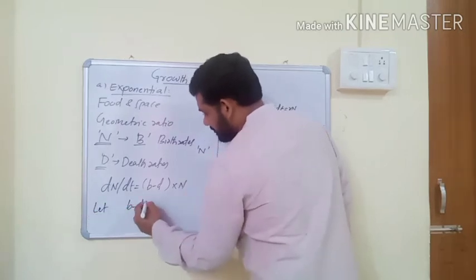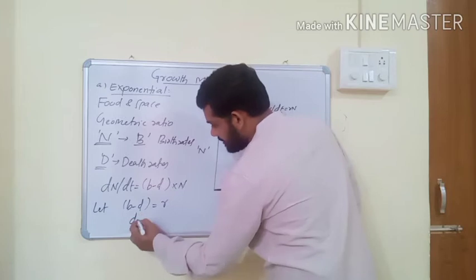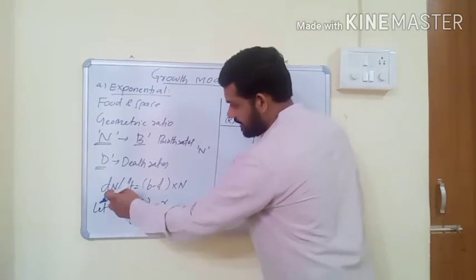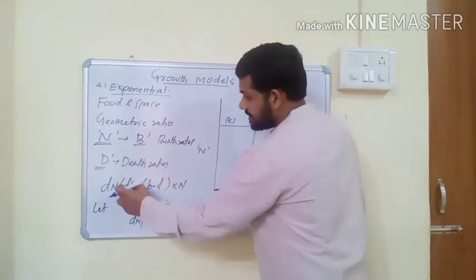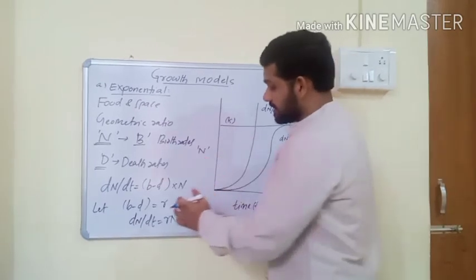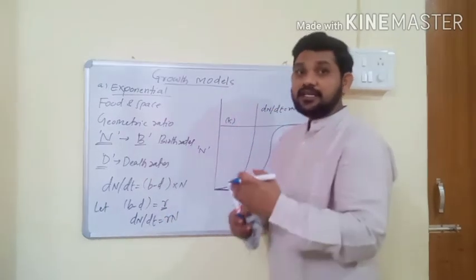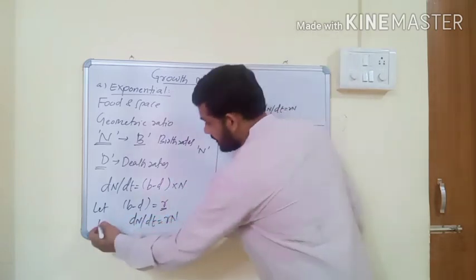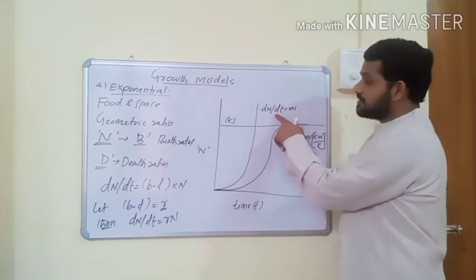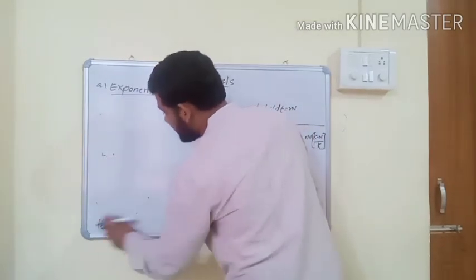If we let b minus D equal r, then the equation for exponential growth rate is dN/dt = rN. Here, dN means population density change and dT means time period. The parameter r represents the intrinsic rate of natural increase of any population, and the equation dN/dt = rN is the equation for the exponential growth model.